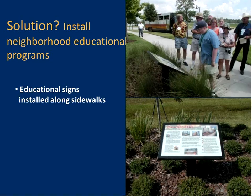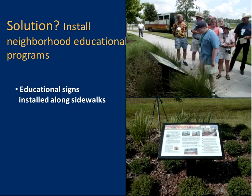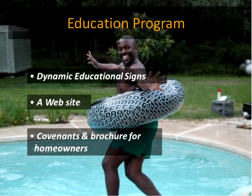One solution we've tried is installing a neighborhood educational program using dynamic signs placed throughout the community, giving information about natural resource topics. One sign, for example, talks about prescribed fire. It's really hard to conduct prescribed fire near neighborhoods unless homeowners are on board, because it creates smoke — but long-term, it not only benefits the ecosystem but also protects their homes from large wildfires spreading across the landscape.